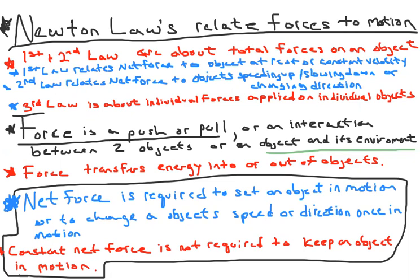The first and second law are trying to do something a little different than the third law, but they're all related. The first and second law are about total forces on an object. The first law relates net force to objects at rest or constant velocity.